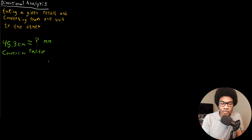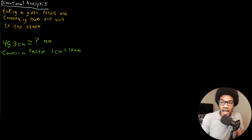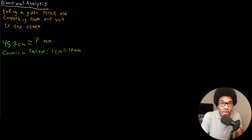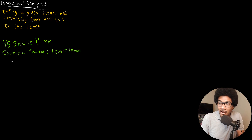The conversion factor relates one unit of a particular dimension to another. Here, the conversion factor is that one centimeter equals 10 millimeters. A question students always run into: once they have the conversion factor, do they divide or multiply? A way to make sure you never get this wrong is to treat these units like you would treat algebra — certain variables cancel out when put in fractions, and the same thing happens with units.